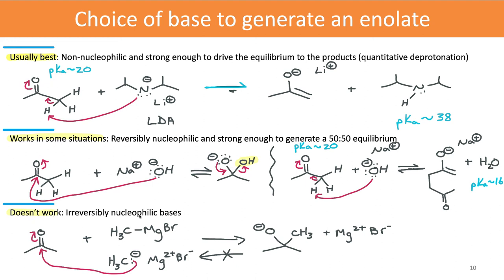So these irreversibly nucleophilic bases are not good choices for generating enolate. Just to review, the best choice or most reliable choice is going to be a strong and non-nucleophilic base, and we want a base that's strong enough to drive that equilibrium over to the product side. Note the big pKa difference between the two acids.